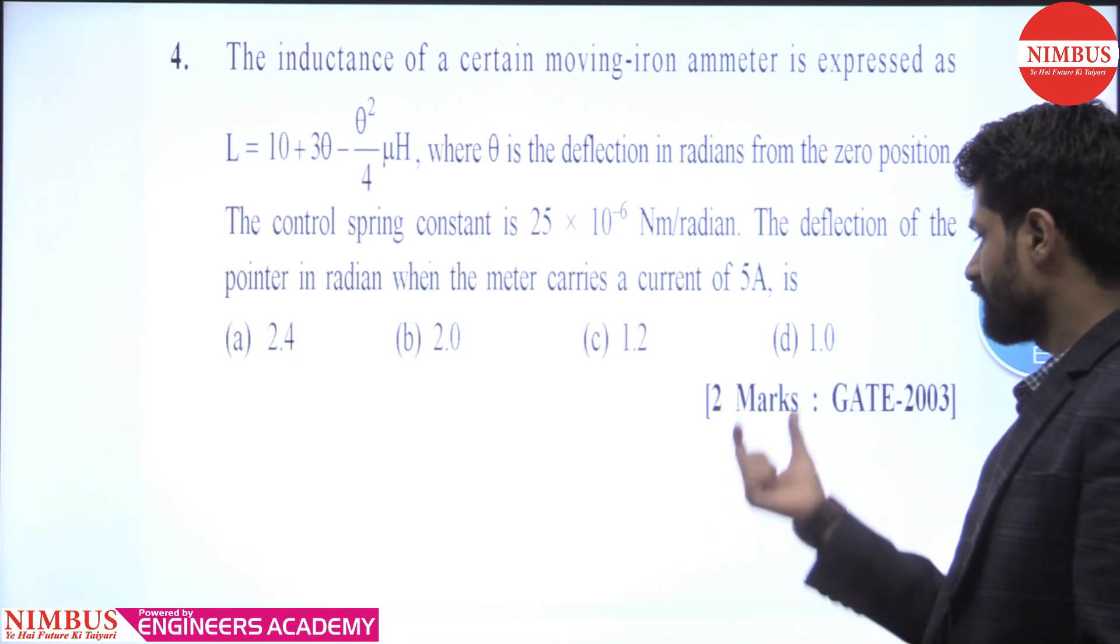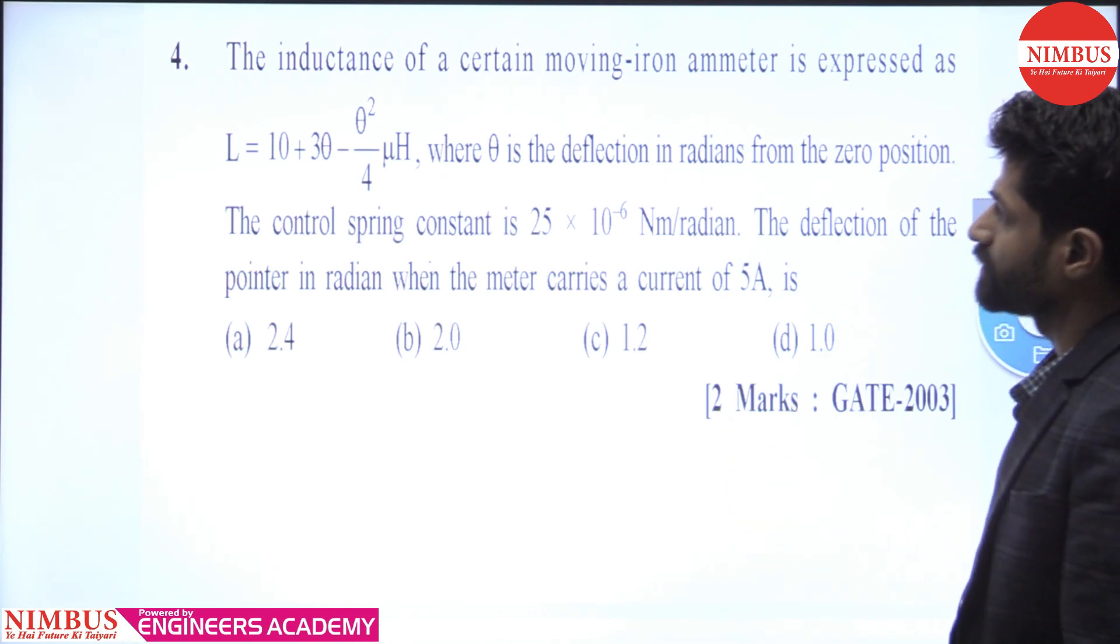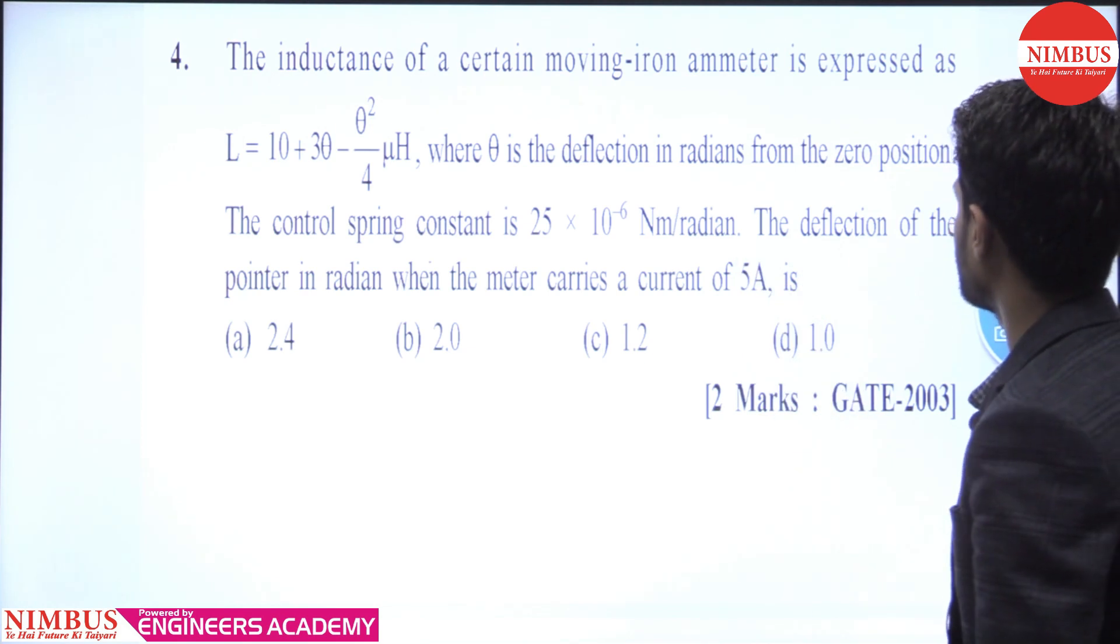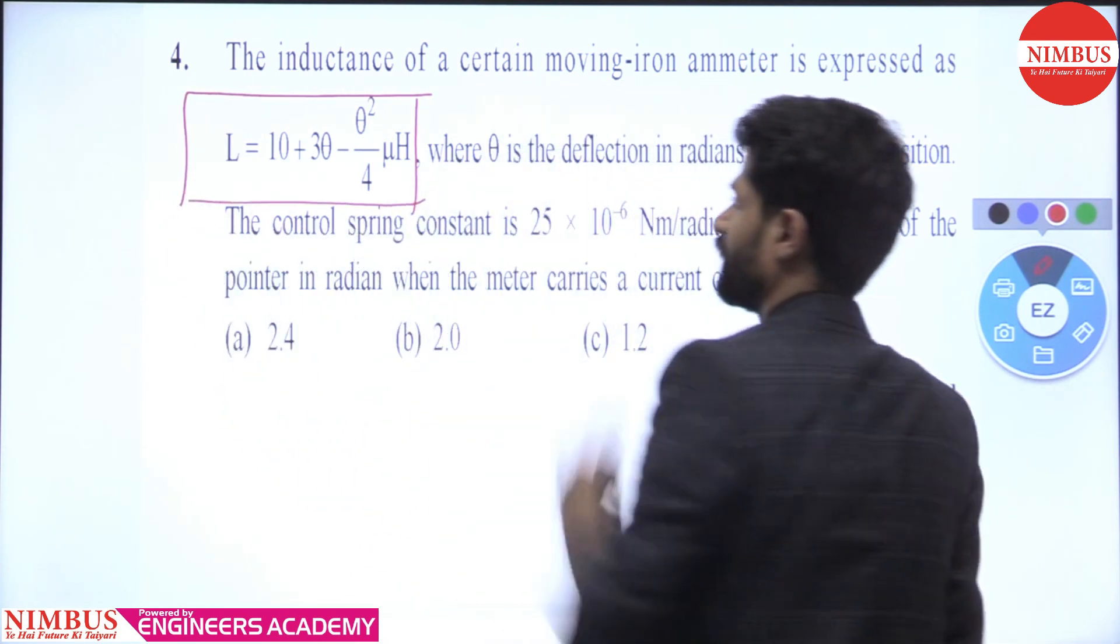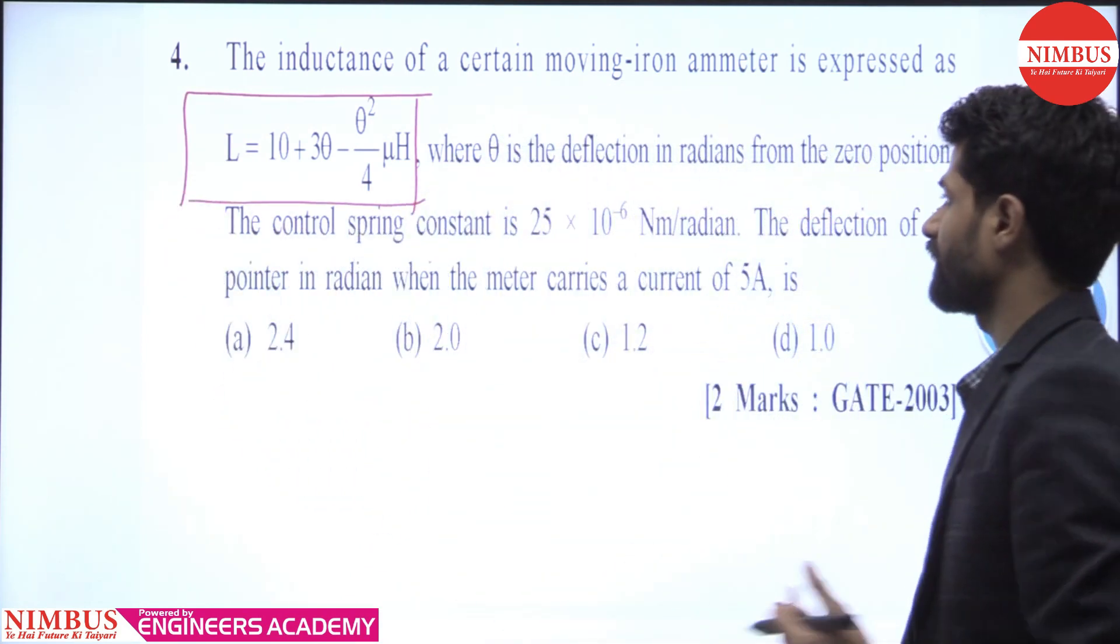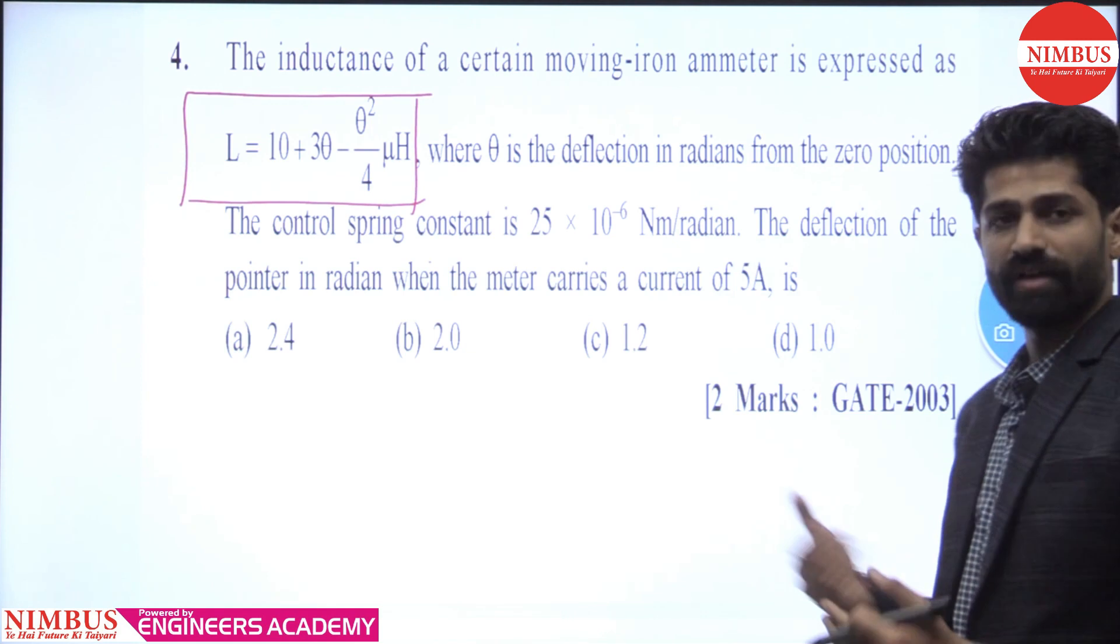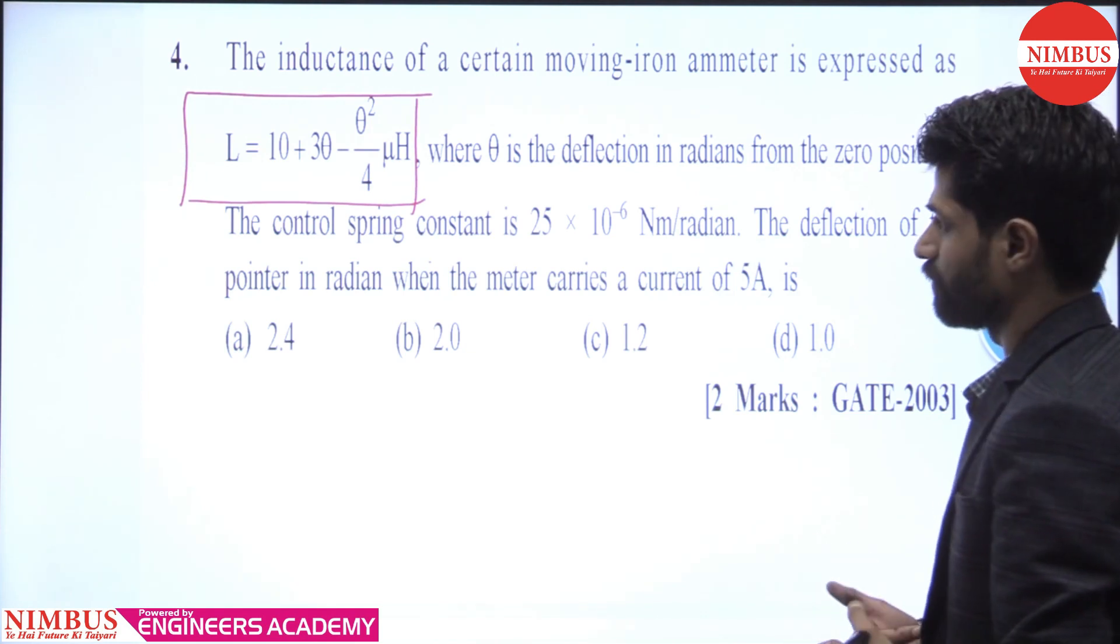The inductance of a certain moving iron ammeter is expressed as L equal to inductance, where theta is the deflection in radians from the zero position.